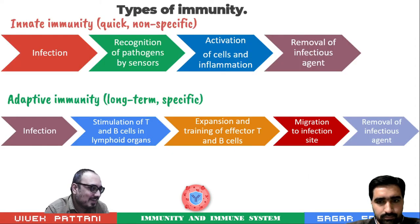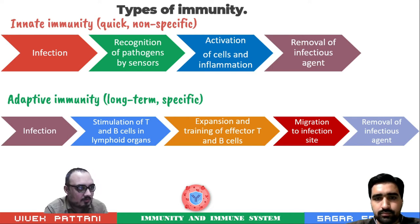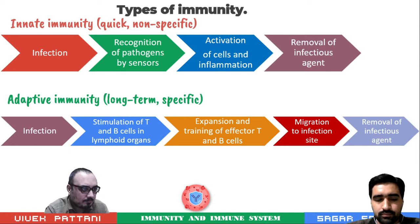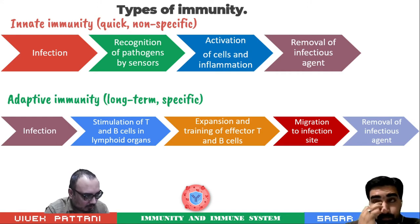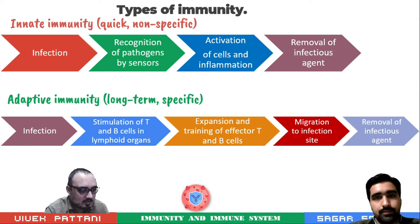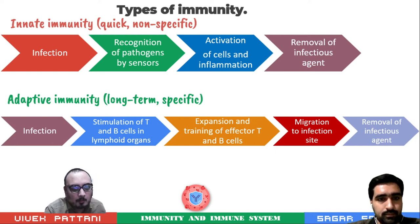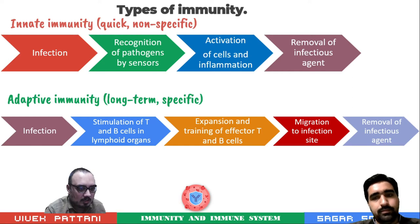Now the basic difference between innate and adaptive immunity. In innate immunity — which is quicker — on onset of infection, the body recognizes pathogens by pattern sensors, activation of cells and inflammation, and finally removal of infectious agents. Whereas in adaptive immunity, a long-term specific response, onset of infection stimulates B cells and T cells in the lymphoid organs, expansion and training of effector T and B cells, migration to the infection site, and finally removal of infectious agents.